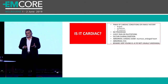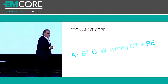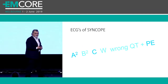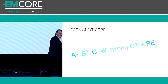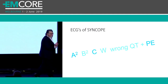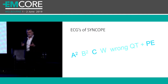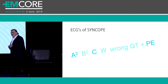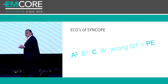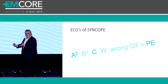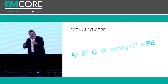The ECG formula for syncope from the adult patient — A²B²C W wrong QT — applies to kids as well. A² stands for ACS and arrhythmogenic right ventricular dysplasia; B stands for Brugada and blocks; C stands for cardiomyopathy; W stands for WPW; wrong QT stands for long QT, congenital long QT, and short QT; plus the ECGs of PE.